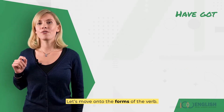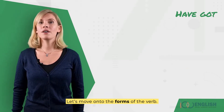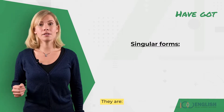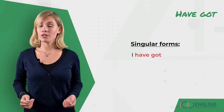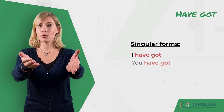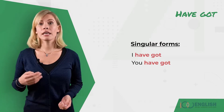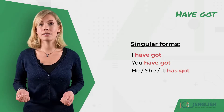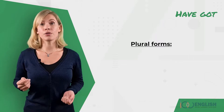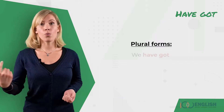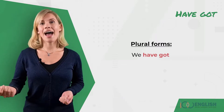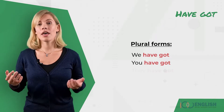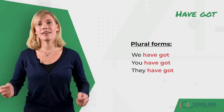Let's move on to the forms of the verb. For the singular form, they are: I have got, you have got, he/she/it has got. For the plural forms, they are: we have got, you have got, they have got.